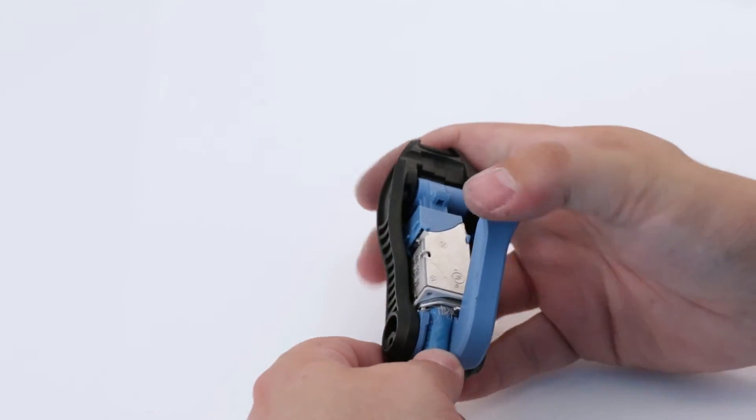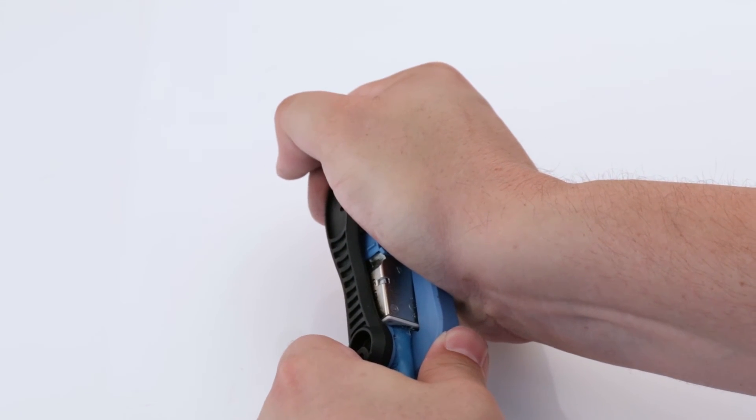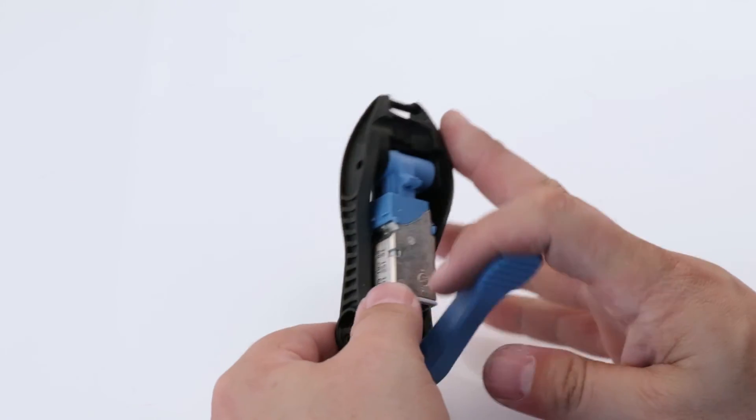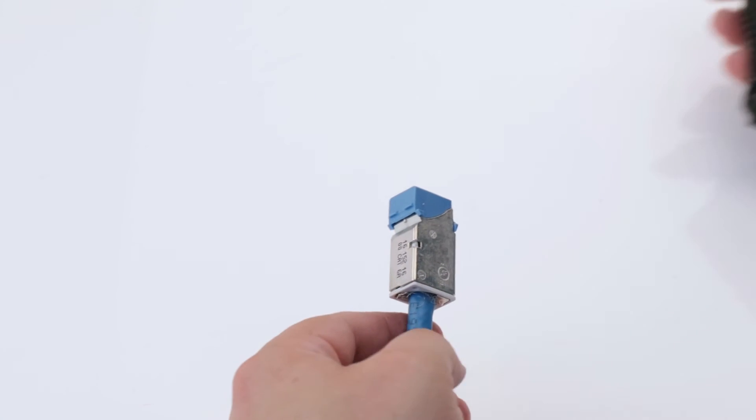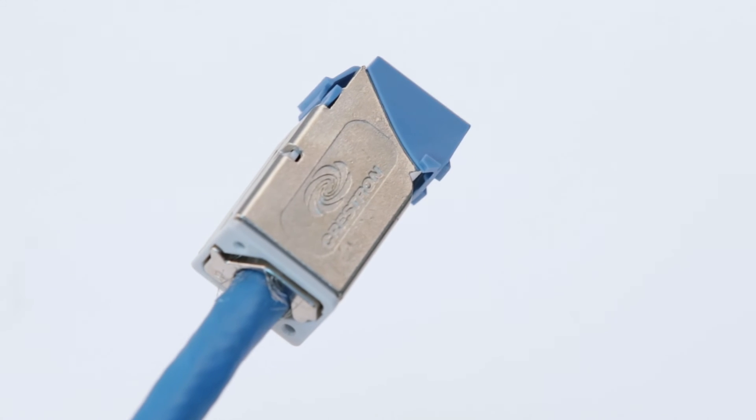Ensure that the module is seated properly in the termination tool, then fully depress the lever until a click is heard. Do not partially depress the lever and then lift to reseat the DM-CON Ultra Reset.